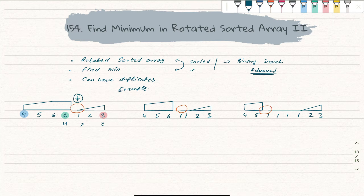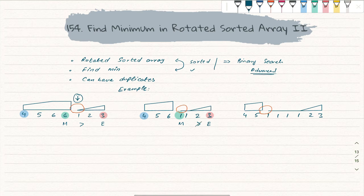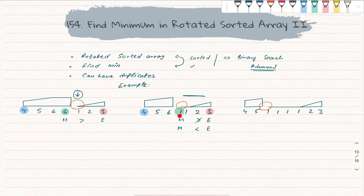In the second example, we take a left pointer, a right pointer, and then a mid. We ask: is mid greater than end? It is not. Then we ask: is mid less than end? This confirms which part is sorted. If mid is less than end, the right side is sorted, so we start looking on the left side instead.